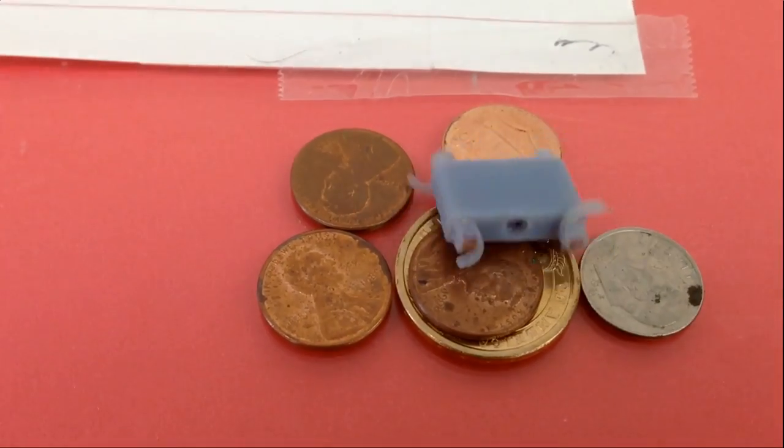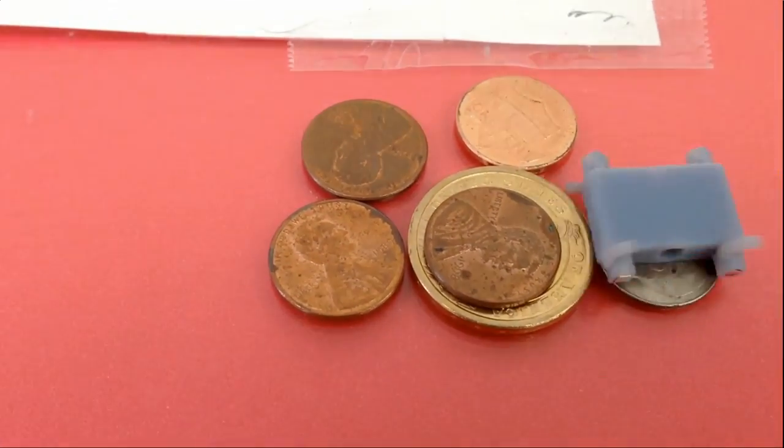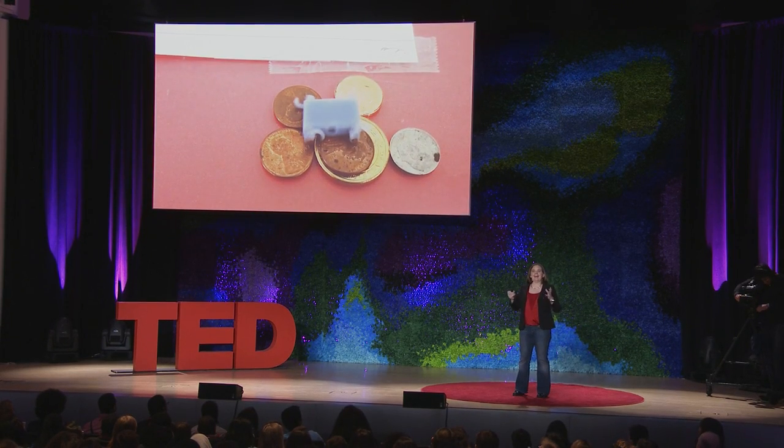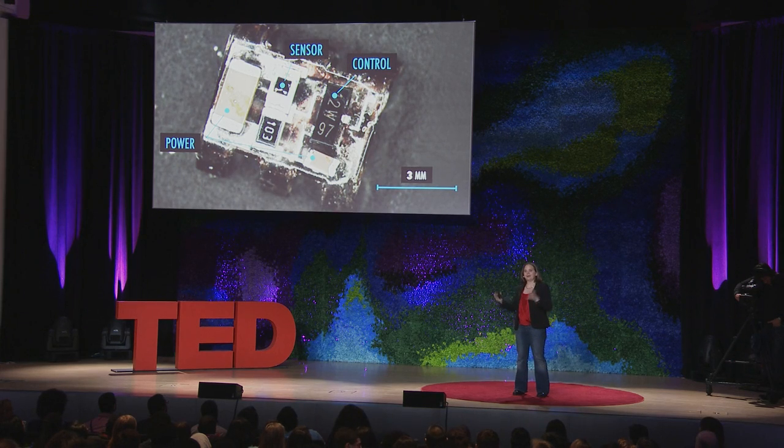We can also make 3D-printed versions of this that can climb over obstacles, a lot like the cockroach that you saw earlier. But ultimately, we want to add everything on board the robot. We want sensing, power, control, actuation all together.